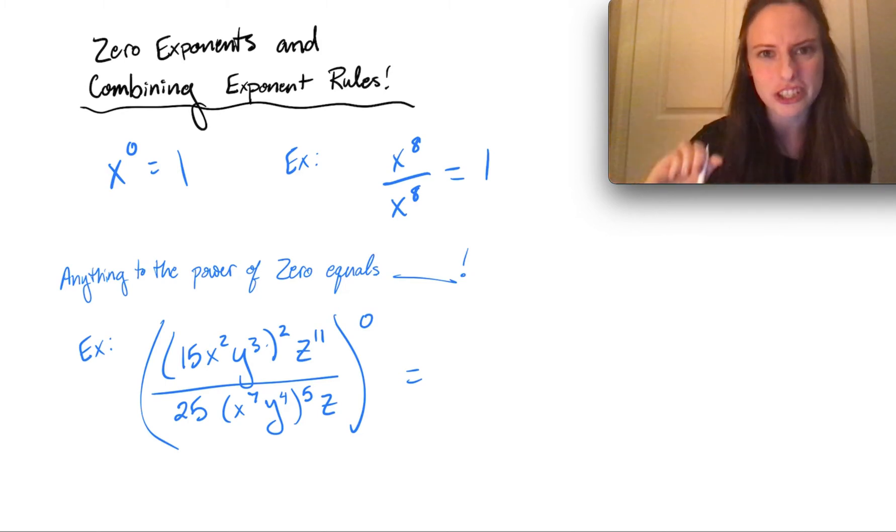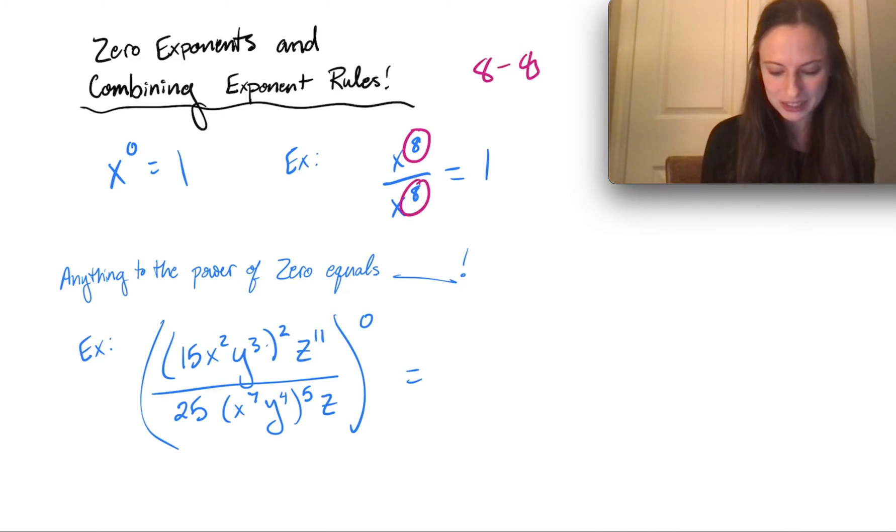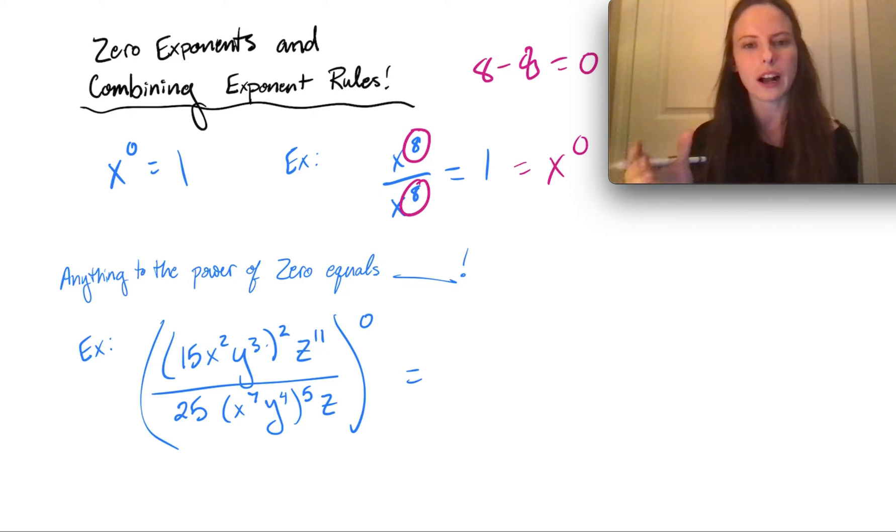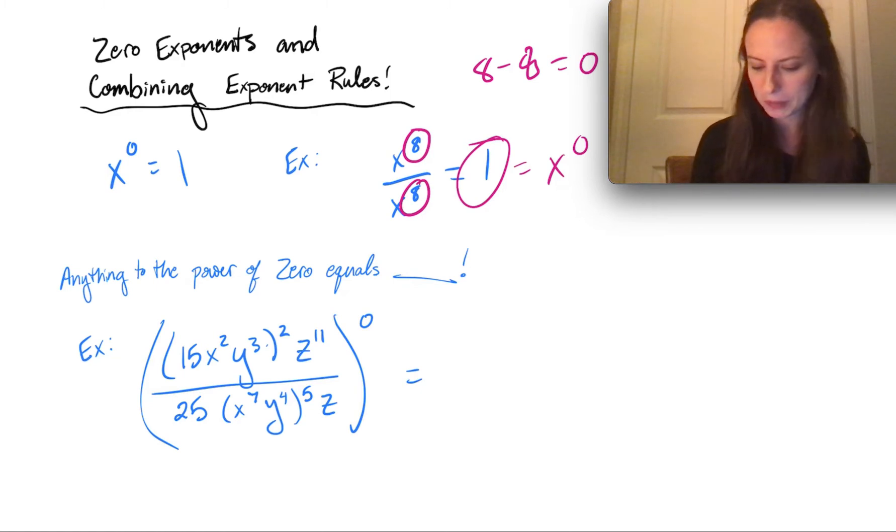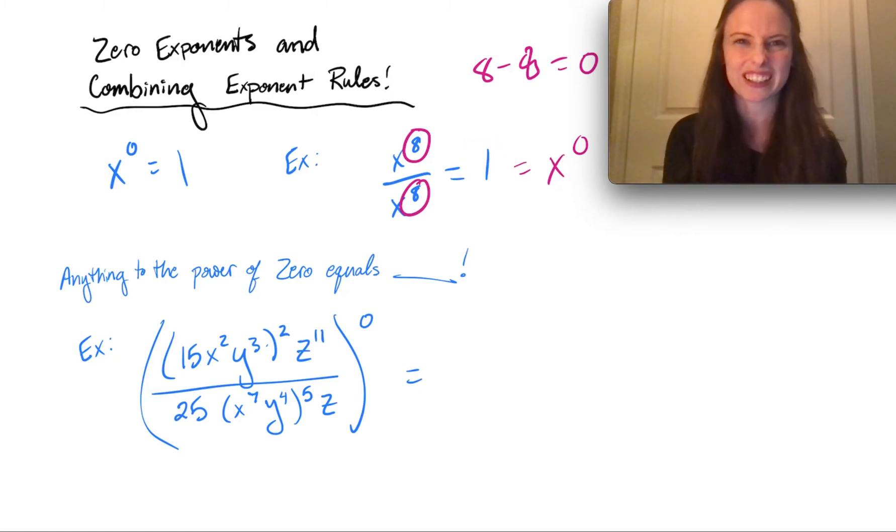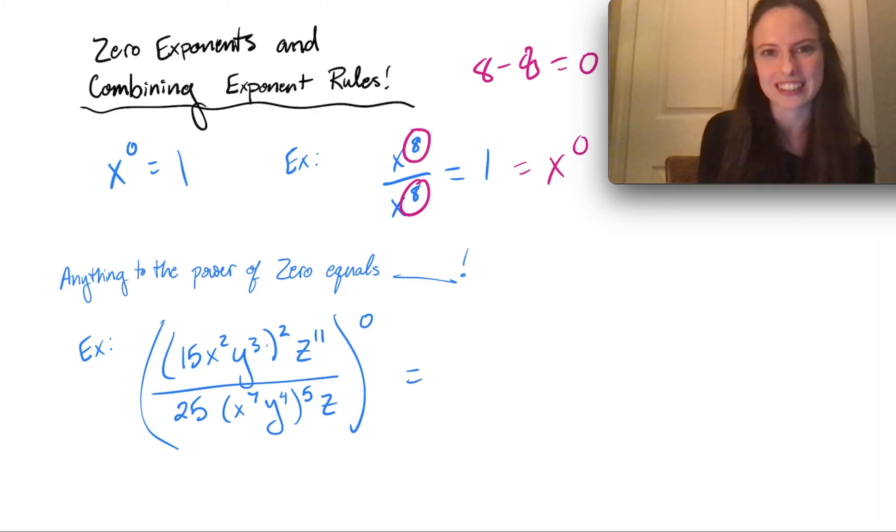Well, think about our subtraction rule when we divide. We would have to subtract the top exponent, 8, minus the bottom exponent, 8. 8 minus 8 equals 0. So this whole thing ends up equaling x to the 0. So you can kind of see how any time you have the same exact thing on top and bottom, it's dividing by itself, which really equals 1 and not a 0. It's just that the exponent 0 creates that answer of 1.